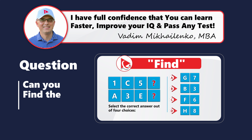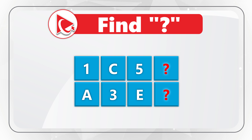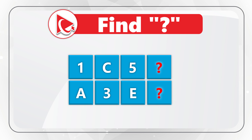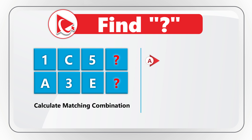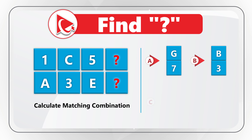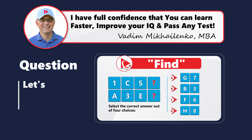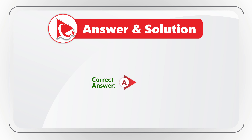Calculating missing items is one of my favorite questions, especially since the calculations are very simple. You're presented with two rows of values. The first row contains: 1, C, 5, and then a missing value. The second row contains: A, 3, E, and then a missing value. You need to select the calculated combination from choices A: G, 7; B: B, 3; C: F, 6; or D: H, 8. I believe the correct answer is choice A, G, 7.